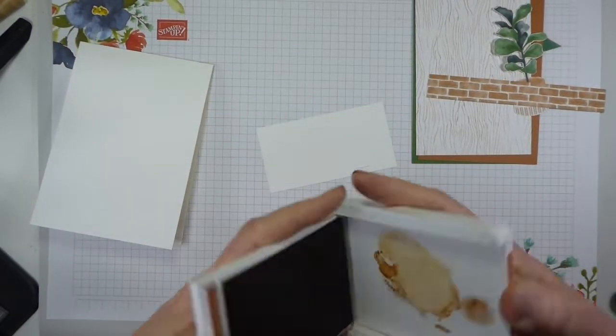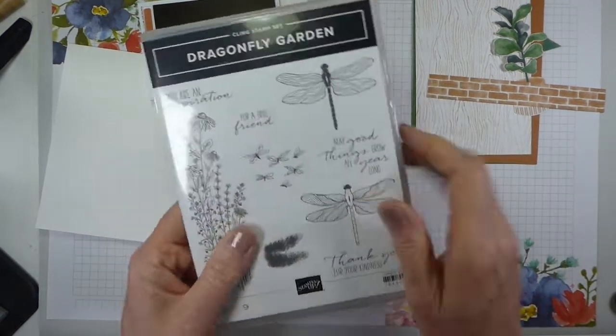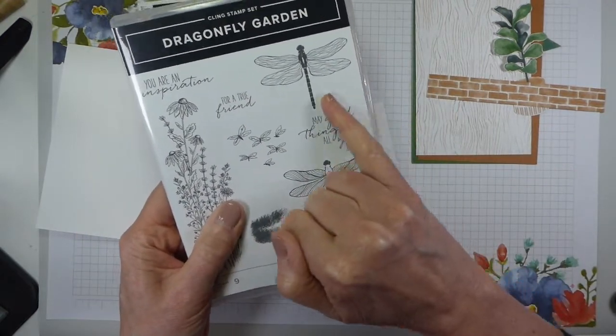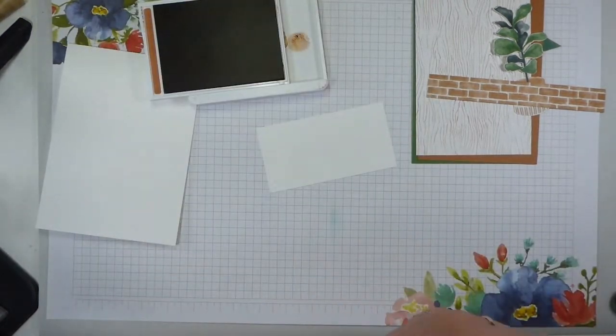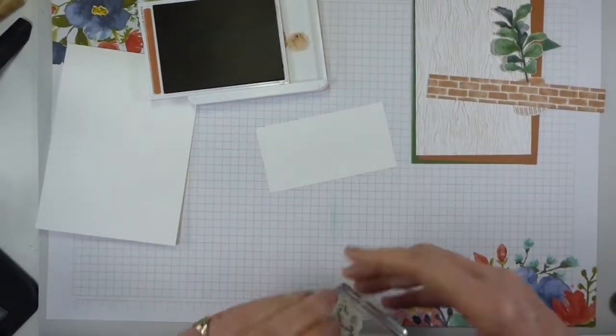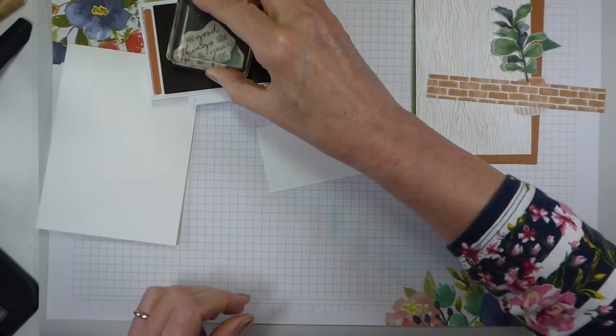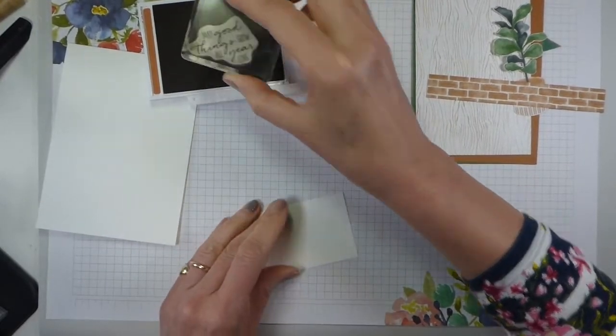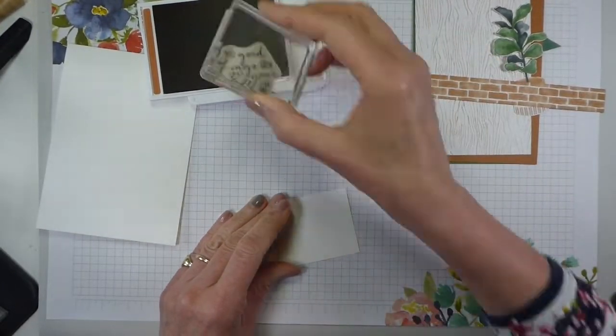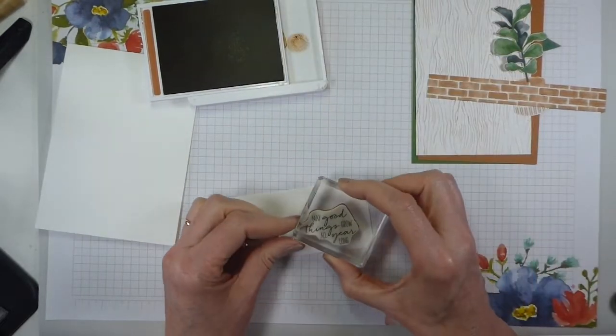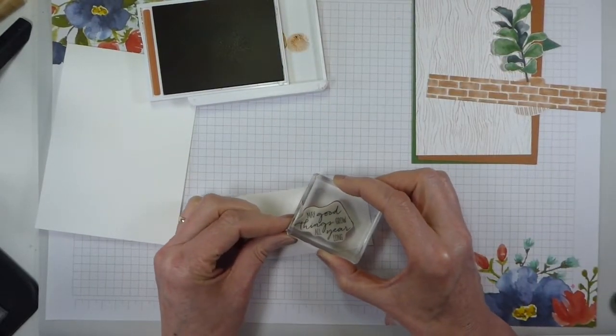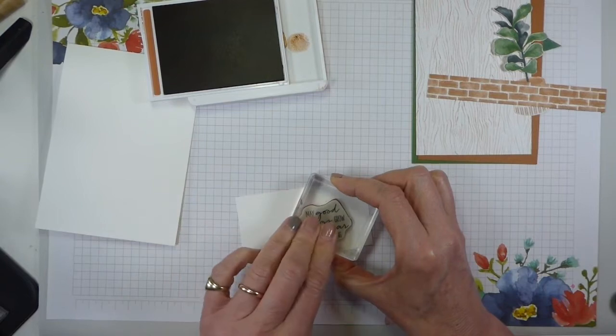Some cinnamon cider and a sentiment that I'm taking from the dragonfly garden. It's 'may good things grow all year long' because I thought that was an appropriate sentiment for this card. I do not at the point of filming this have the stamps and dies to go with this paper. They are on their way from Germany as we speak. They have shipped.